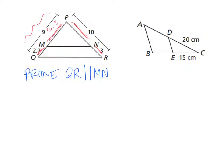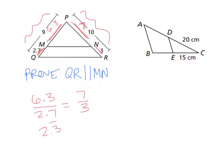On the other side, the whole thing is 10 and the small part is 3, so the other part is 7. If these two things were parallel, we'd need 6.3 over 2.7 to equal 7 over 3. Using a calculator, 6.3 over 2.7 gives 2.3 repeating, and 7 over 3 also gives 2.3 repeating. Since these numbers are the same, we can say definitively that those two sides are parallel.